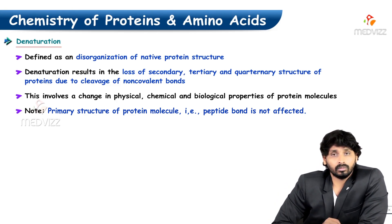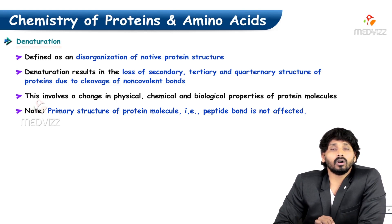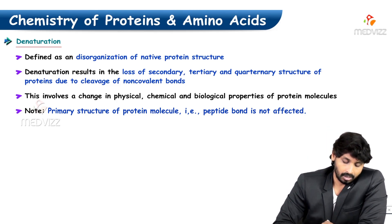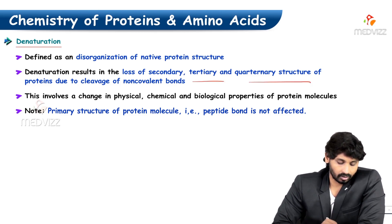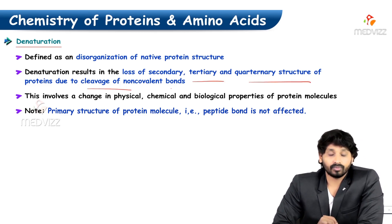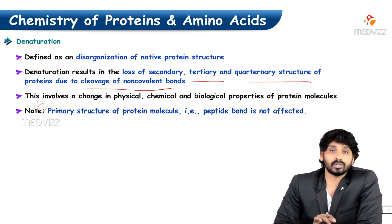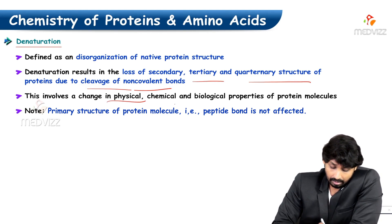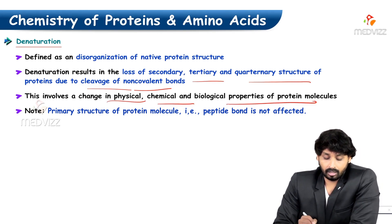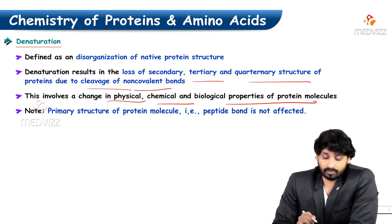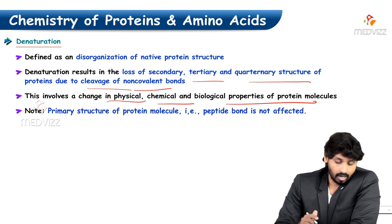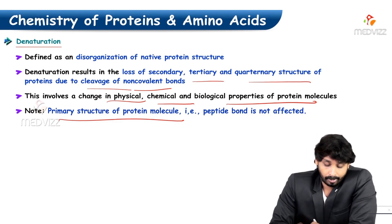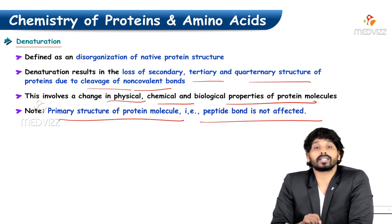In formal terms, denaturation can be defined as loss of secondary, tertiary, and quaternary structure of protein due to cleavage of non-covalent bonds. This involves changes in physical, chemical, and biological properties of protein molecules. The primary structure of the protein molecule cannot be disturbed because the peptide bond is not affected by external forces.